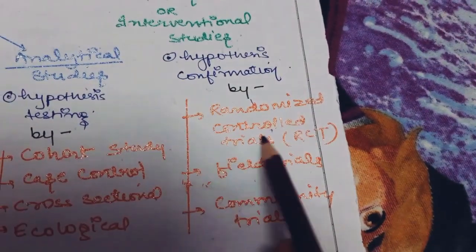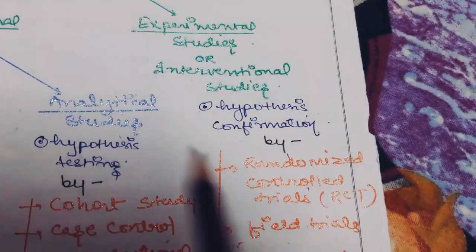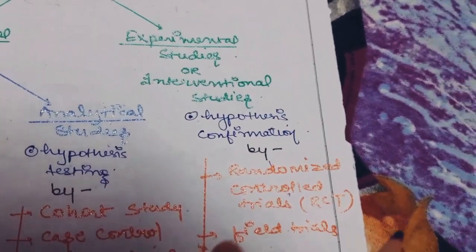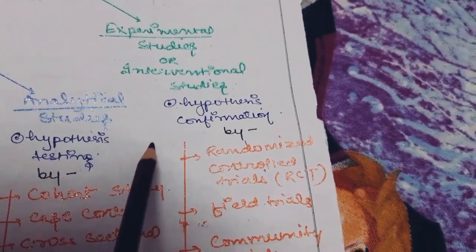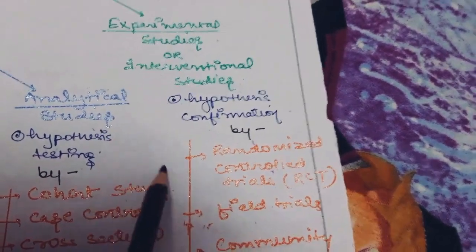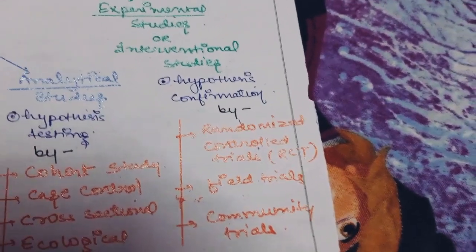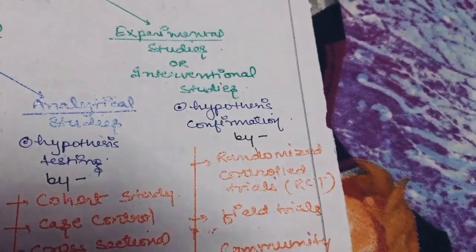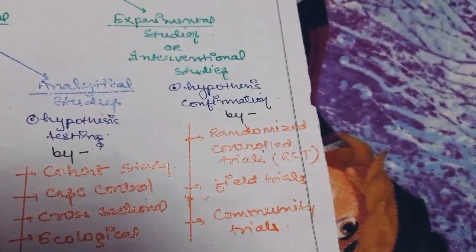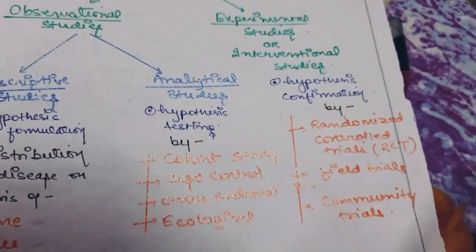To confirm our hypothesis and give scientific proof, we do experimental studies, which include randomized control trials, field trials, and community trials. Here we do some intervention — earlier we were only observing, but now we make changes. We confirm that cigarette smoking is one of the risk factors of lung cancer. Then we try to treat the disease by making drugs and vaccines, which involves animal studies and human studies in certain phases — all of that comes under experimental studies. This was just the introductory part; I'll cover all these studies in detail in further videos.